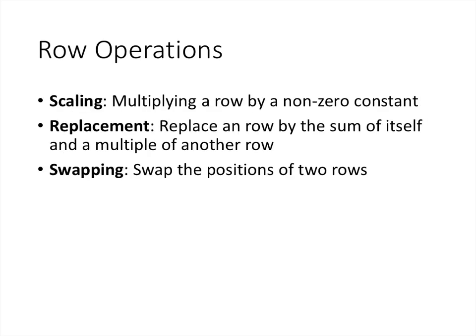We're going to take our original matrix and get it into echelon form using one or more of these row operations: the scaling operation, which multiplies a row by a nonzero constant; the replacement operation, which replaces a row by the sum of itself and a multiple of another row; and the swapping operation, which swaps the positions of two rows.